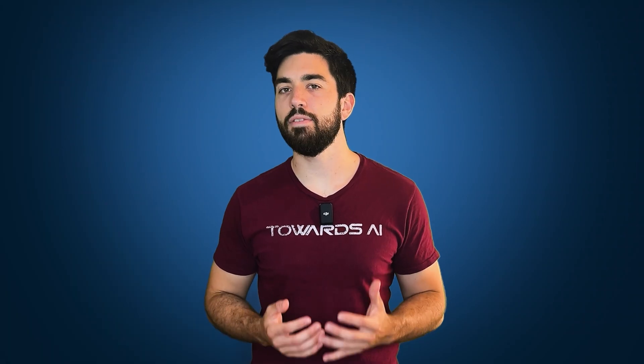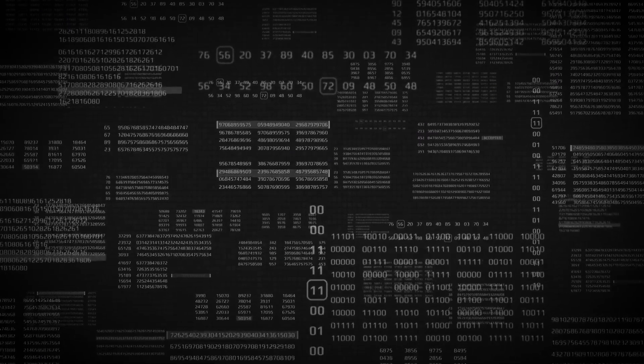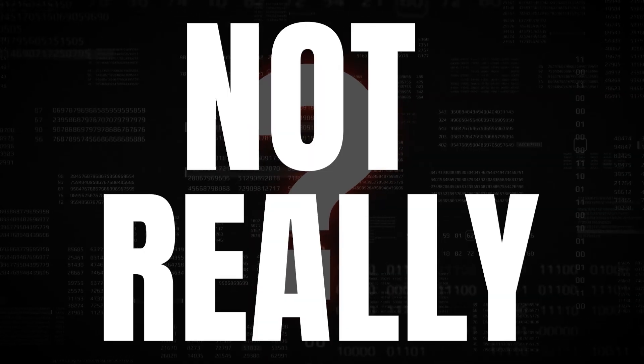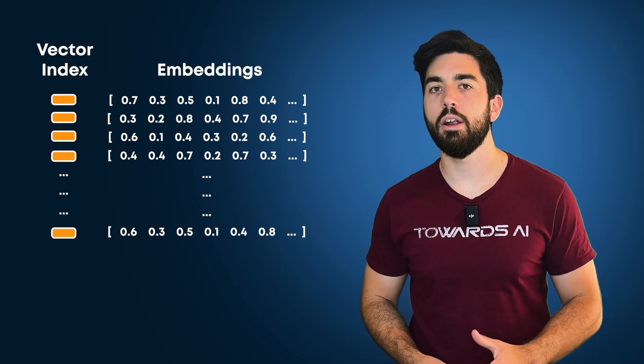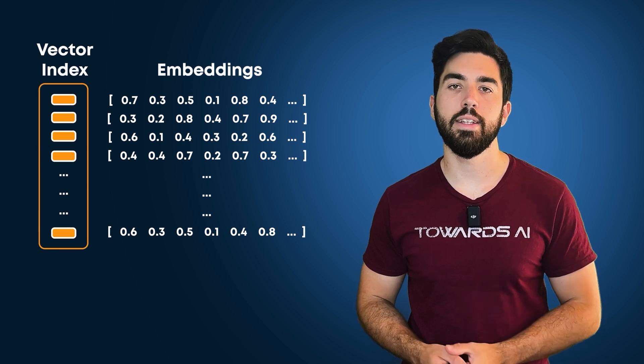What happens if we have millions and millions of vectors? Do we still compare each of them in our database to our query vector? Not really. This is where we need a good vector index.